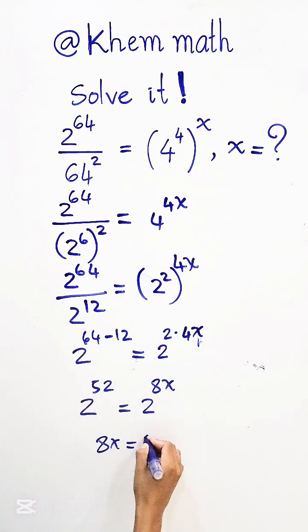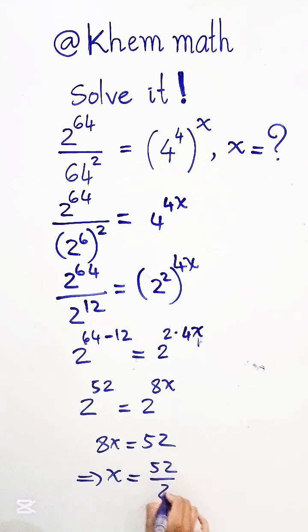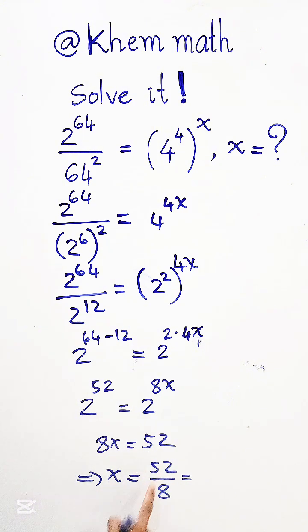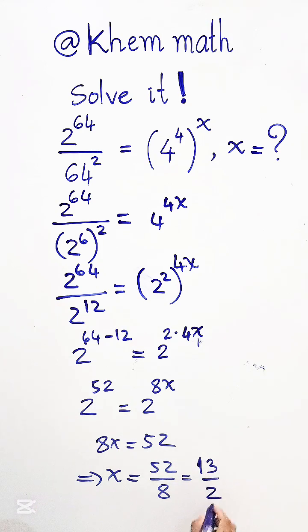So we get 8x equals 52. Dividing both sides by 8, we simplify by 4: the numerator gives 13 and the denominator gives 2, so x equals 13 over 2.